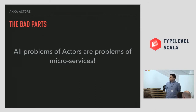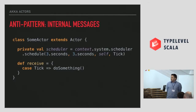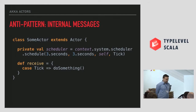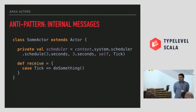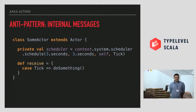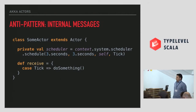Here's an anti-pattern. Usually this is something easy to do: you set a tick that gets triggered every three seconds and you evolve the actor — do a database request maybe. This is an anti-pattern because it's hard to test. All messages should be external. The actor should only evolve in response to external messages — otherwise this is untestable.